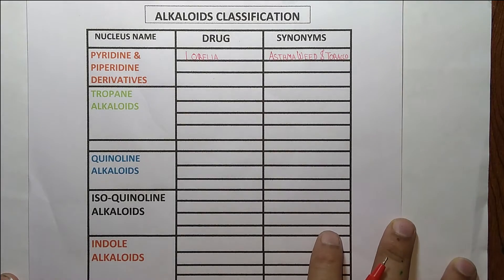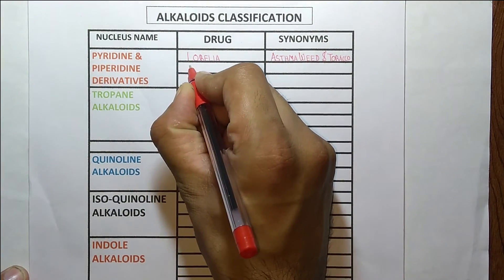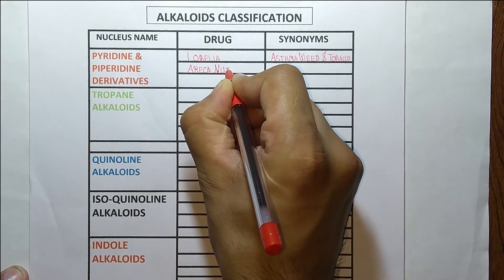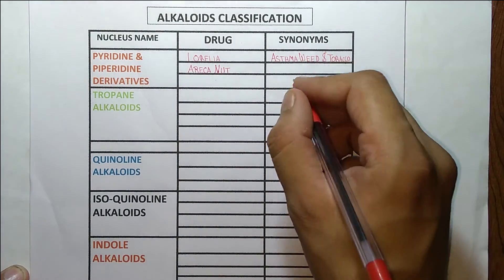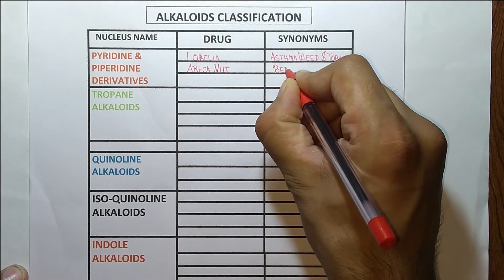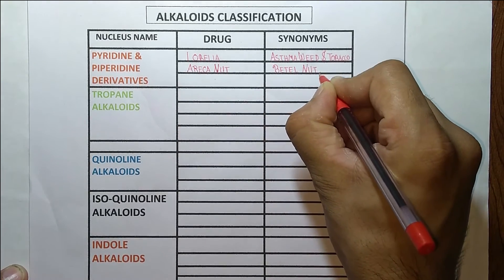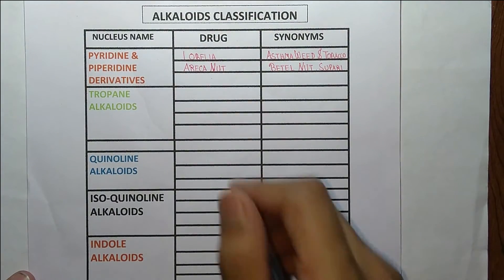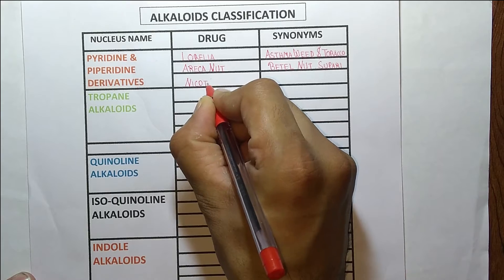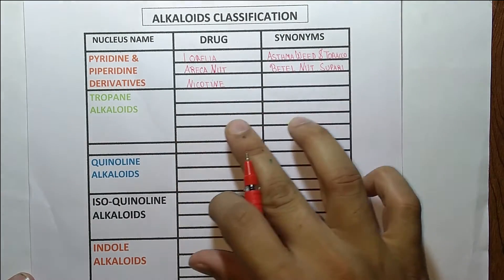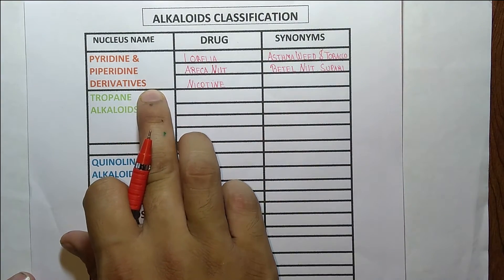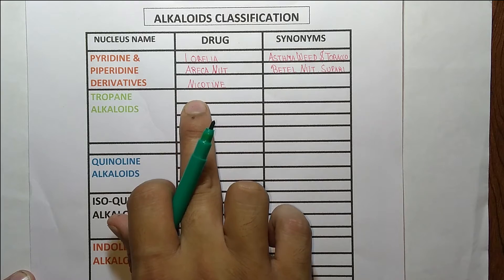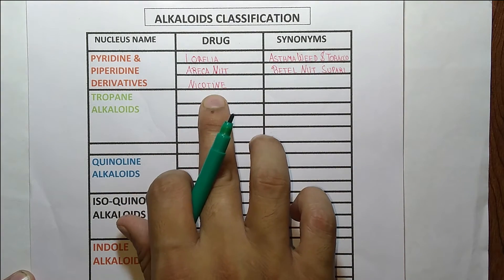The next drug is areca nut. Its synonym is betel nut, also known as supari. The next drug is nicotine. So these three drugs — lobelia, areca nut, and nicotine — belong to the pyridine and piperidine derivatives. If a question asks which drug belongs to this group and the options include lobelia, areca nut, or nicotine, choose any of these three.